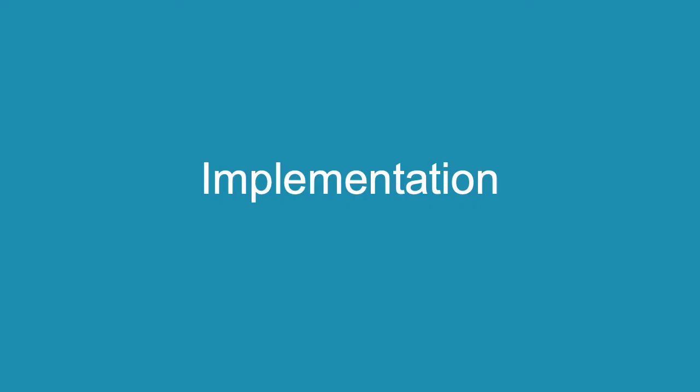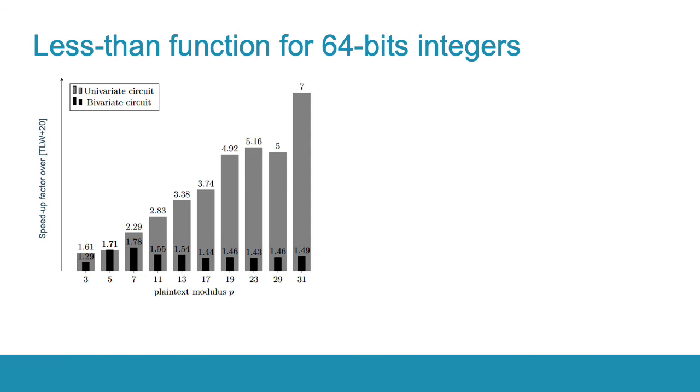We implemented the presented algorithms, including the prior work in HElib, which is a homomorphic encryption library realizing the BGV scheme. For the experiments, we used an average laptop. We compared the performance of both our circuits of the less-than function with the prior work of Tan et al. In this graph, you can see the speed-up factors of each of our circuits depending on the plaintext modulus p.